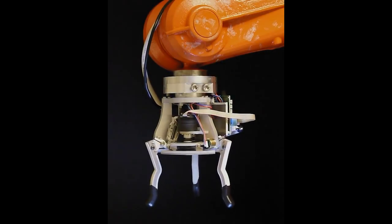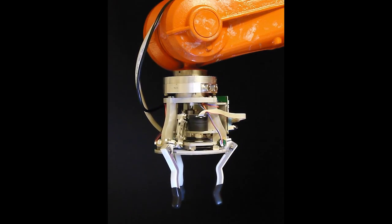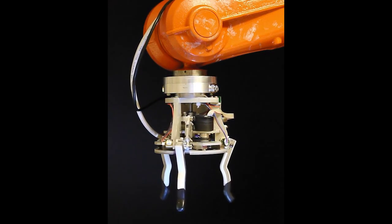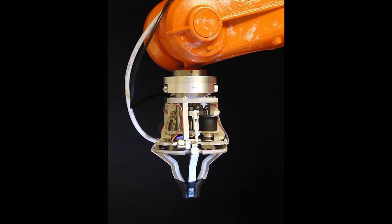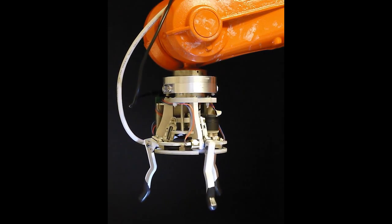Here at the Manipulation Lab at Carnegie Mellon University, we are exploring regrasp actions for simple grippers, like the MLAB hand shown here, which uses only 1 actuator.